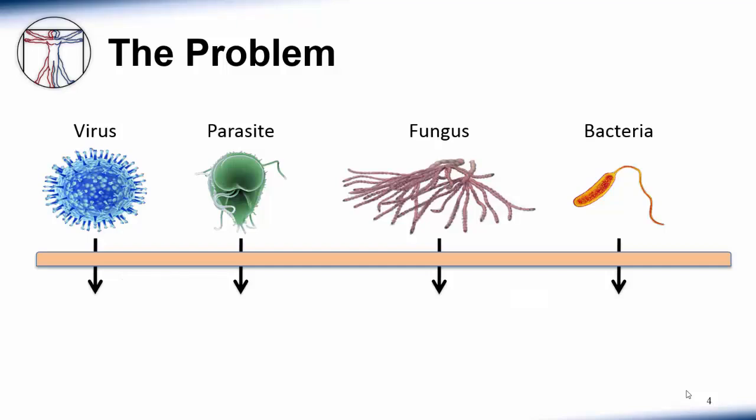Our immune system evolved in response to a very specific problem. No matter what stage of evolution we had reached, other organisms tried to infect us. These other organisms took a wide variety of forms, including viruses, parasites, fungi, and bacteria. Each of these organisms had different mechanisms of getting into us and causing harm. Thus, our ancestors had to come up with a variety of strategies to fight off these invaders.